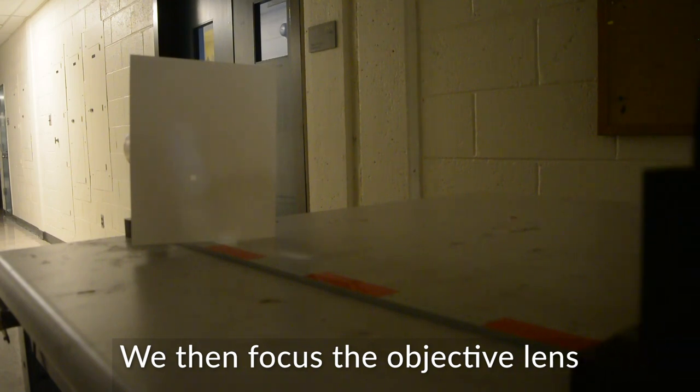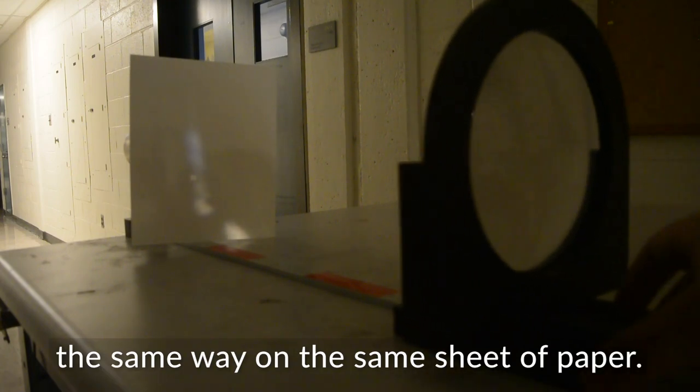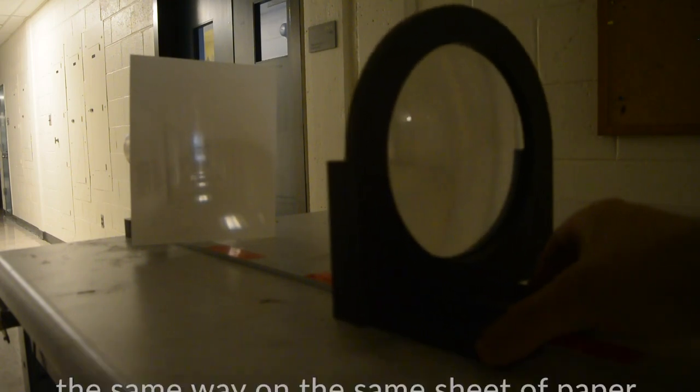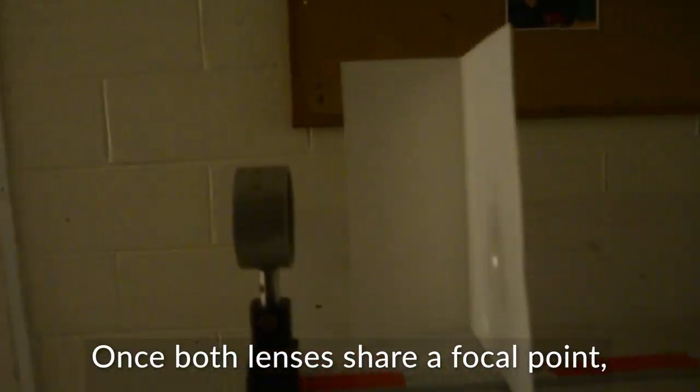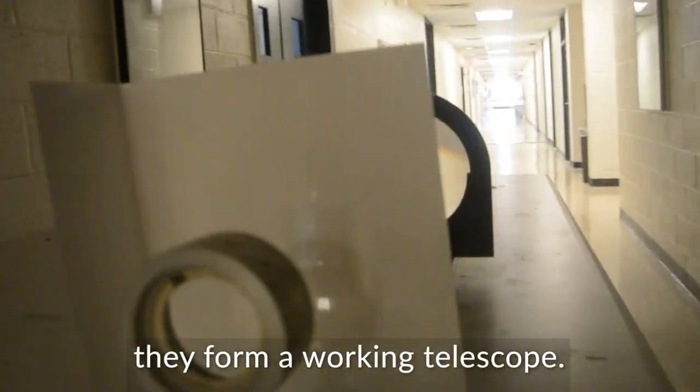We then focus the objective lens the same way on the same sheet of paper. Once both lenses share a focal point, they form a working telescope.